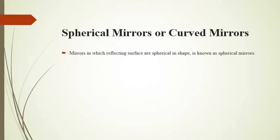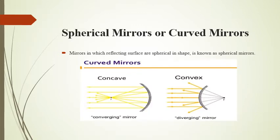Now let's talk about different kinds of mirrors. A spherical mirror or curved mirror is a mirror in which the reflecting surface is spherical or curved. There are mainly two types of curved mirrors: the first one is concave, and the second one is convex. There is a lot of confusion about which one is convex and which one is concave, so let's clear that up so that you never have any confusion again.